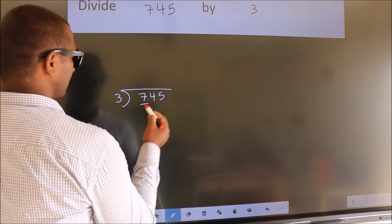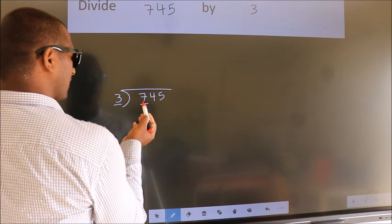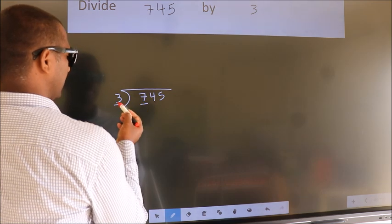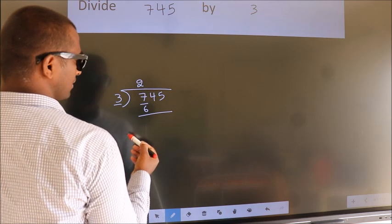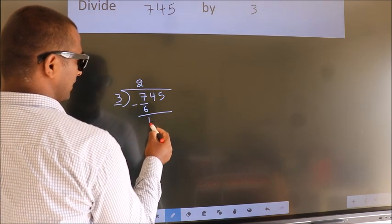Here we have 7. Here 3. A number close to 7 in 3 table is 3 2's 6. Now we should subtract. We get 1.